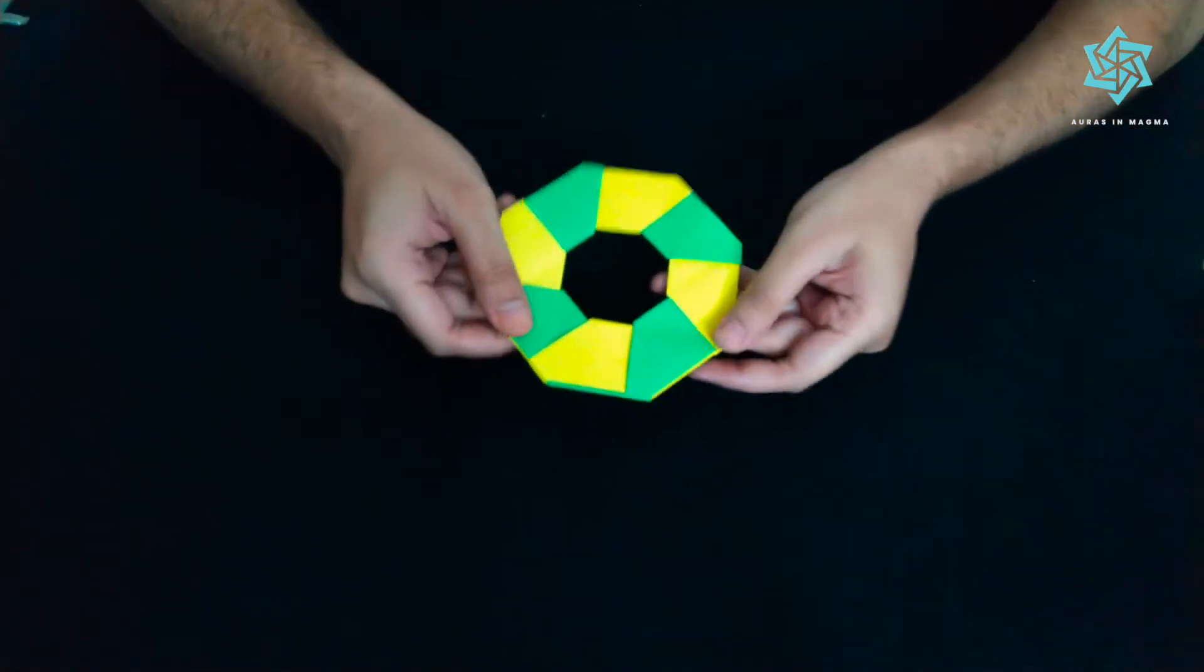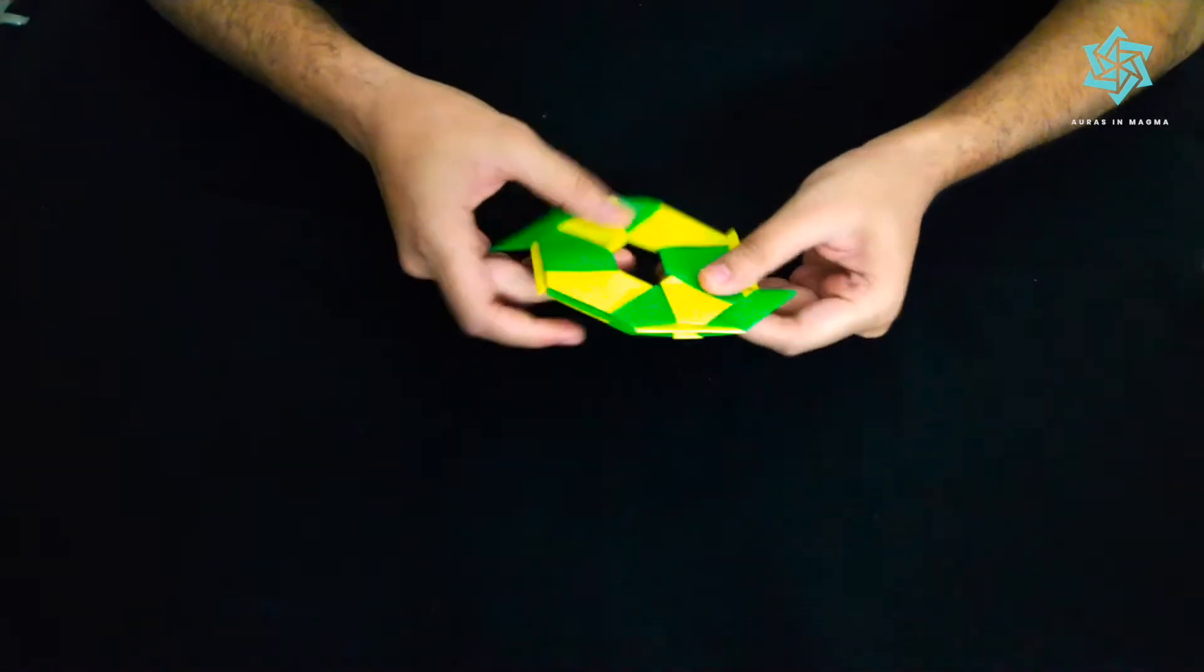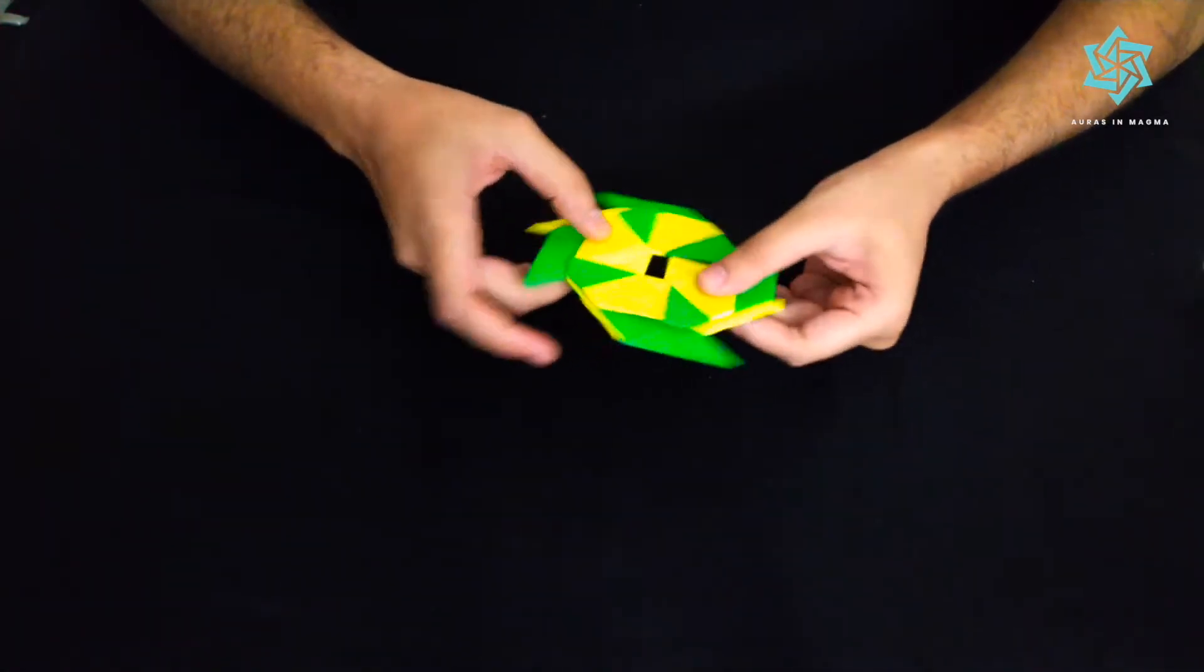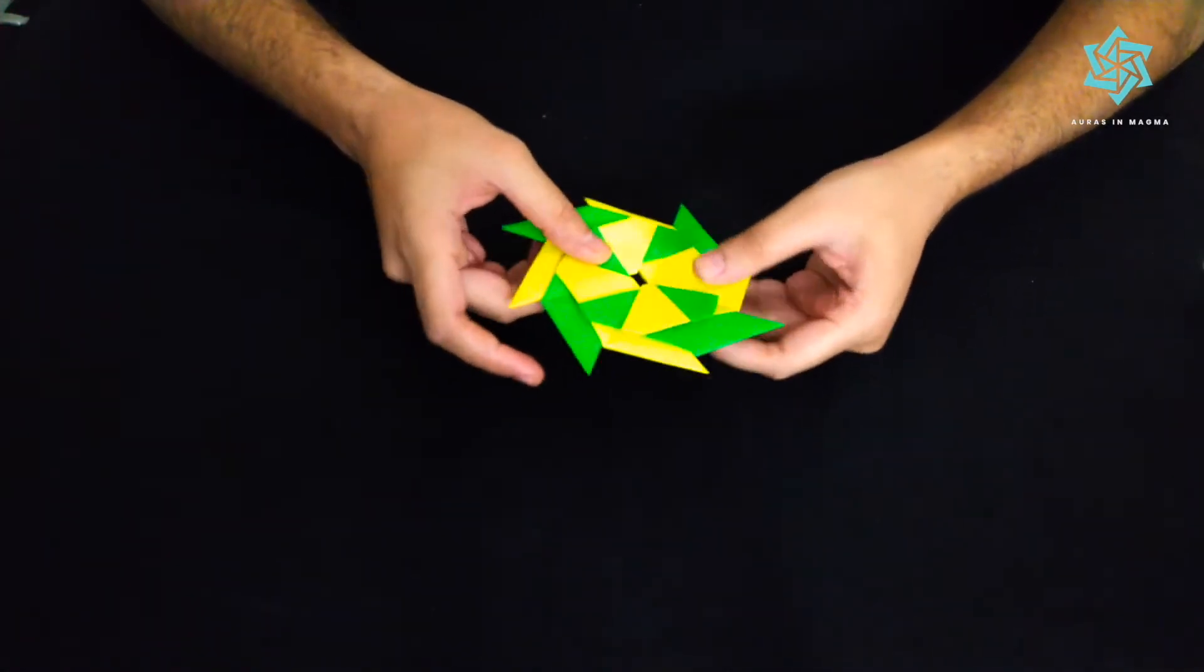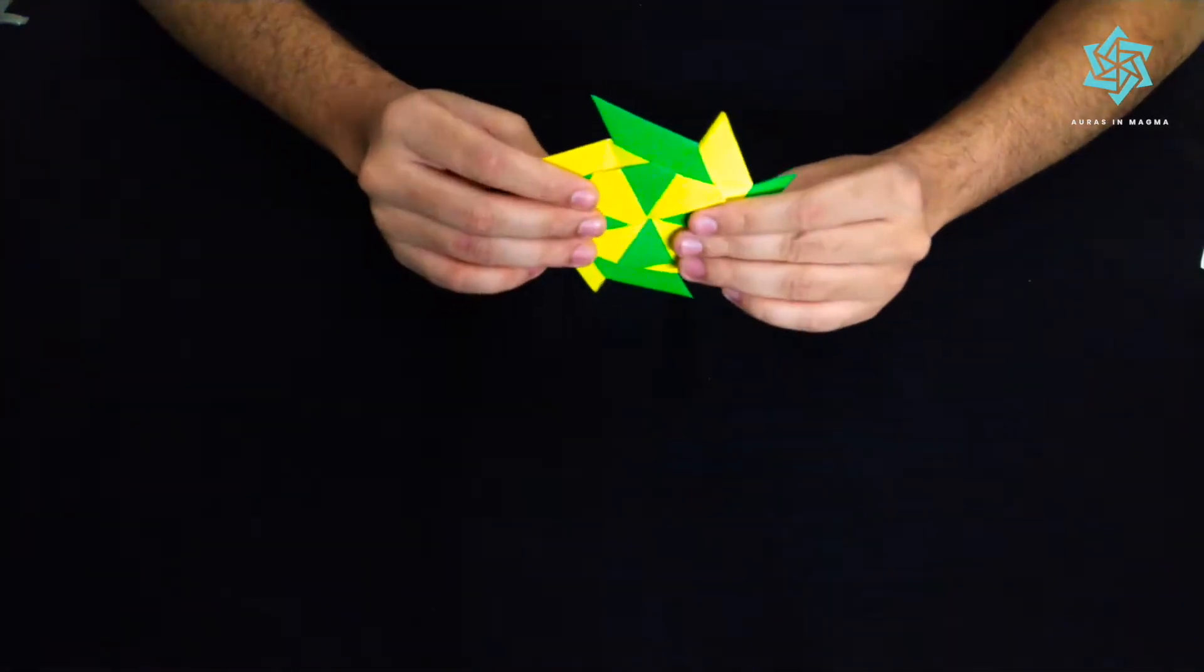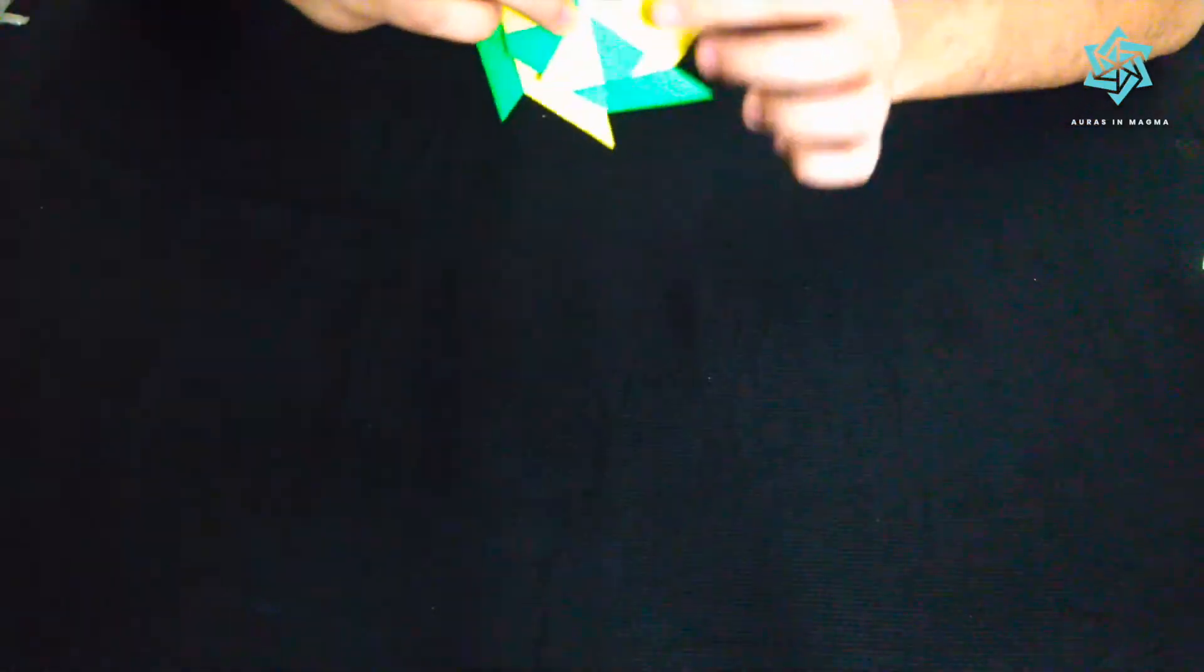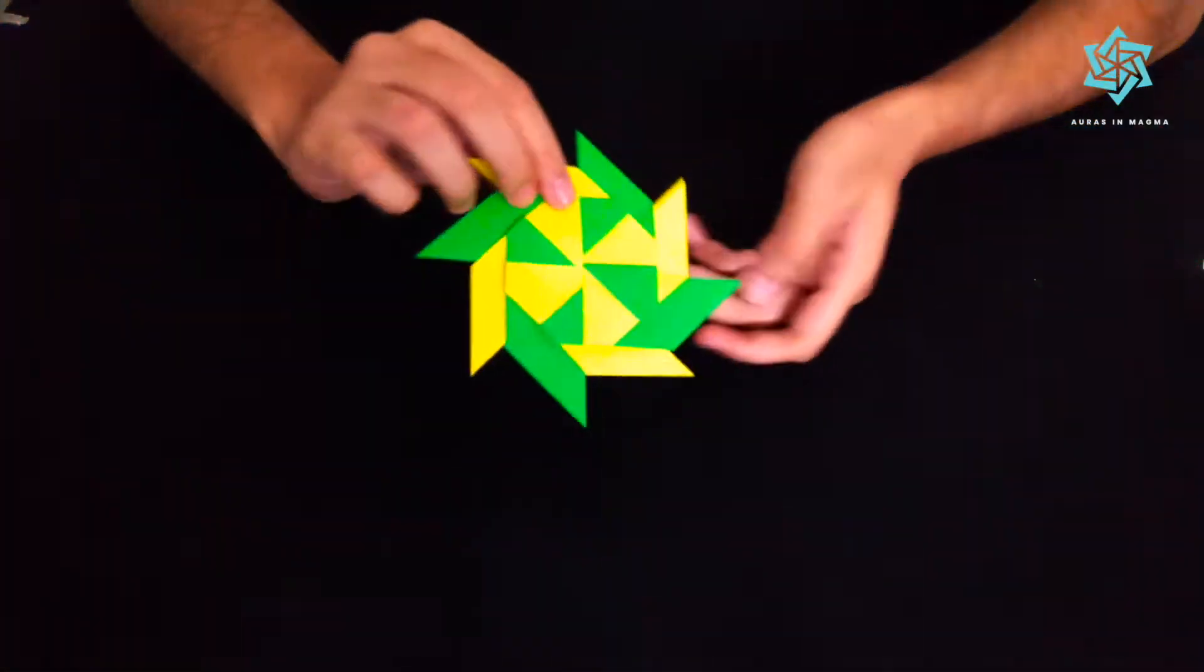So we just push these pieces together a bit and you can see the ninja star emerging from this. See here is a ninja star. Can you all see that? So now there are eight different pieces in this ninja star.